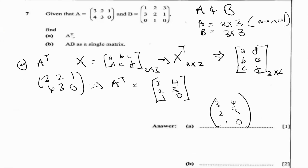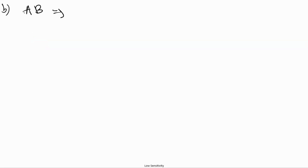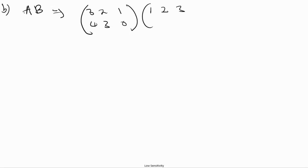The next question, which we'll solve on the next slide, is to find the product A times B and represent it as a single matrix. We're already given A — it's [3, 2, 1 / 4, 3, 0] — and B is [1, 2, 3 / 3, 2, 1 / 0, 1, 0].